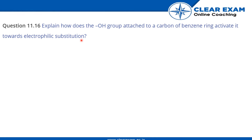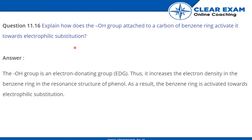The question is: explain how does the OH group attached to a carbon of the benzene ring activate it towards electrophilic substitution. The OH group is an electron-donating group (EDG) because oxygen has lone pairs of electrons.